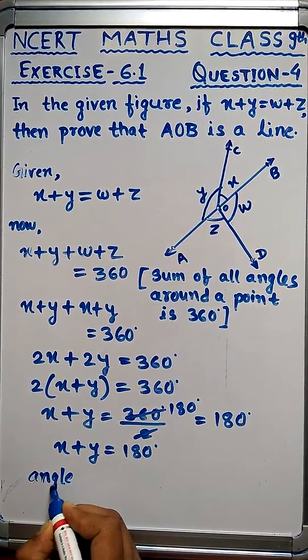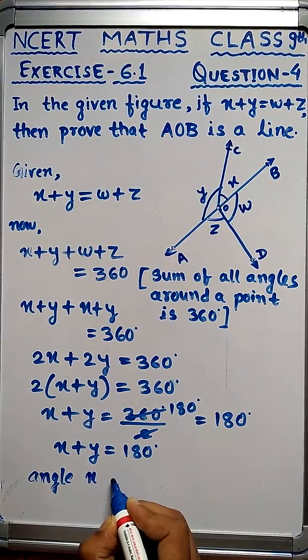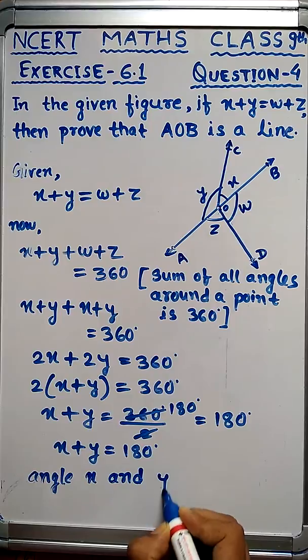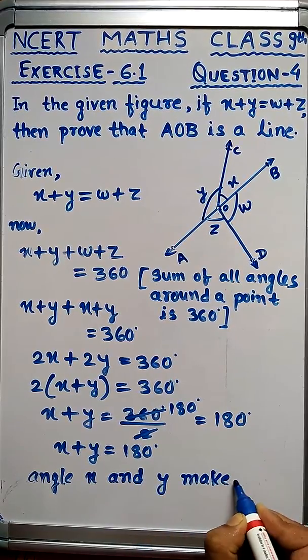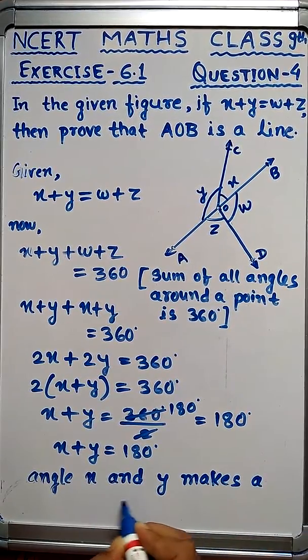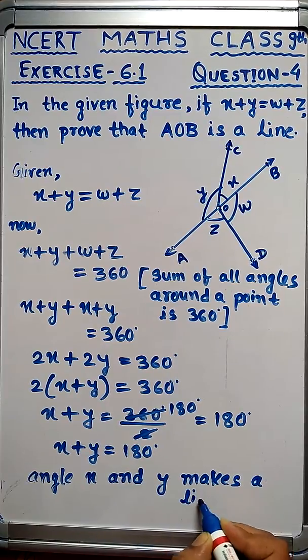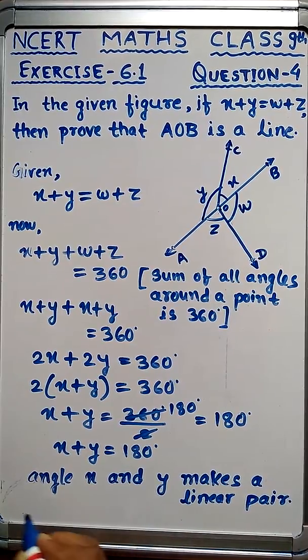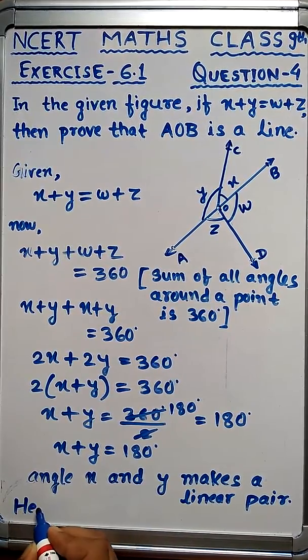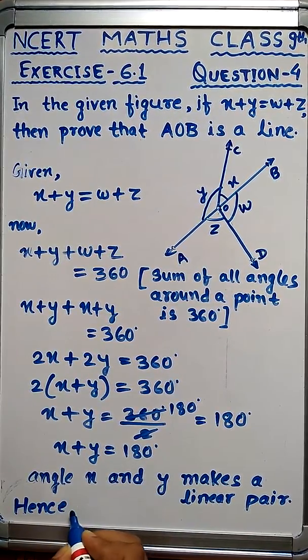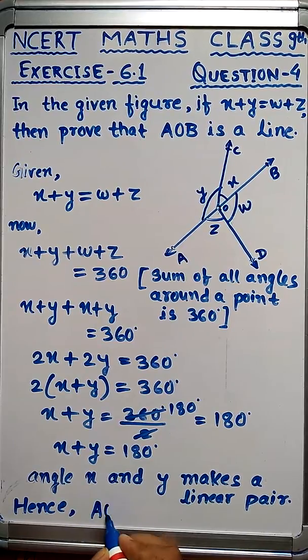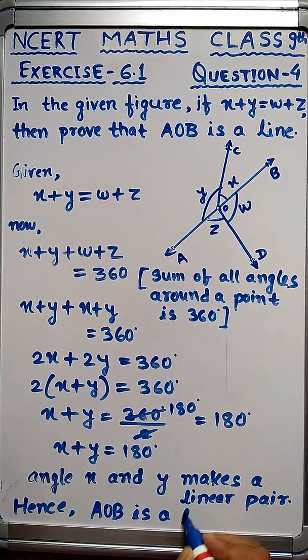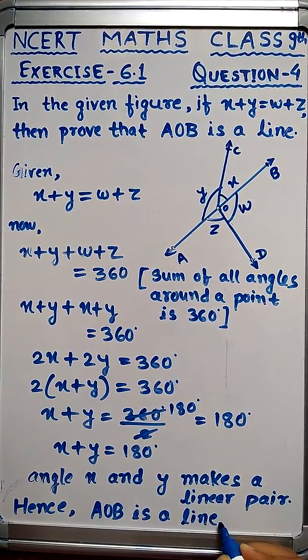Therefore, angles x and y make a linear pair. Hence, AOB is a line. Proved.